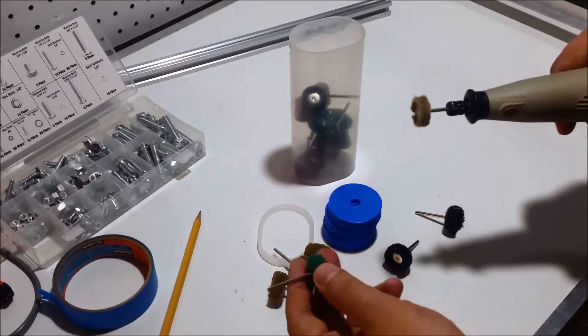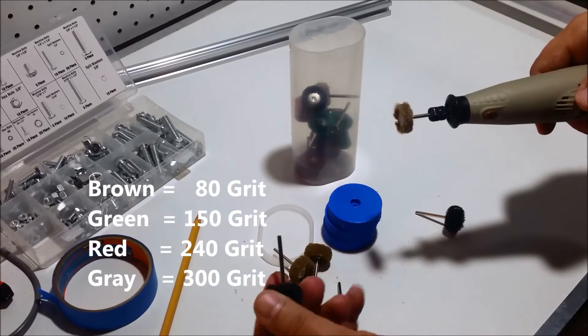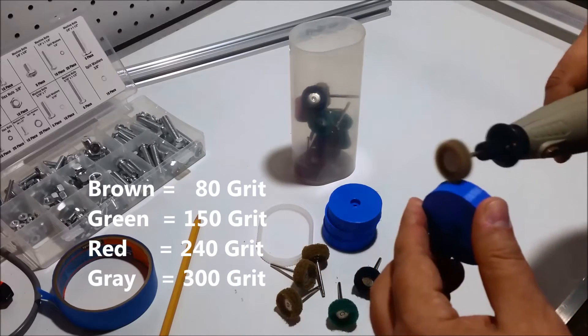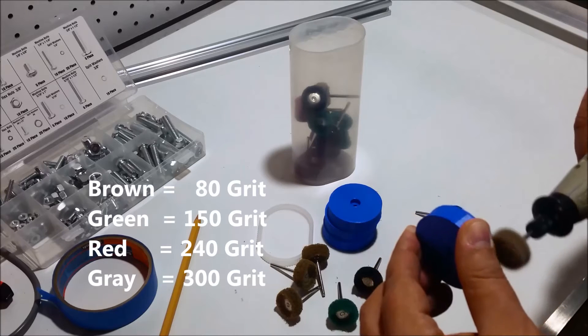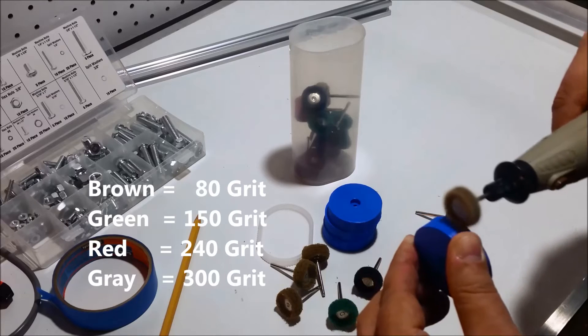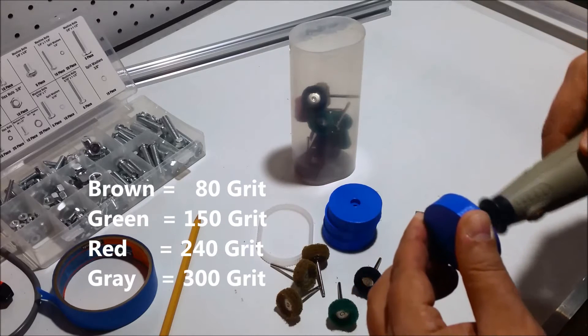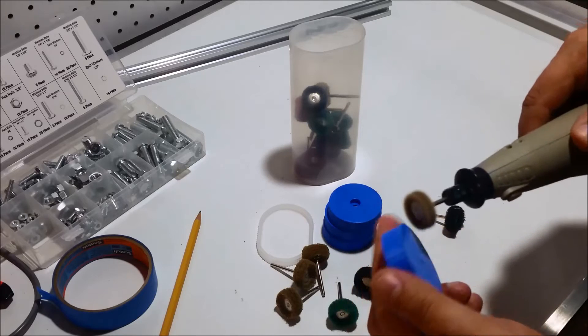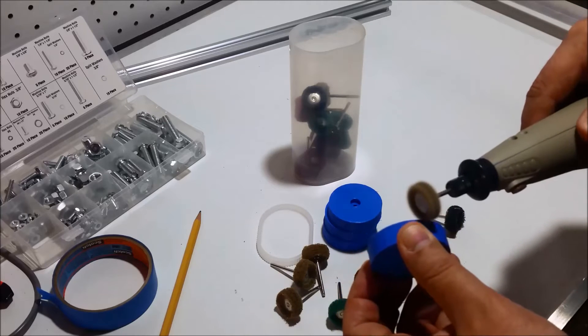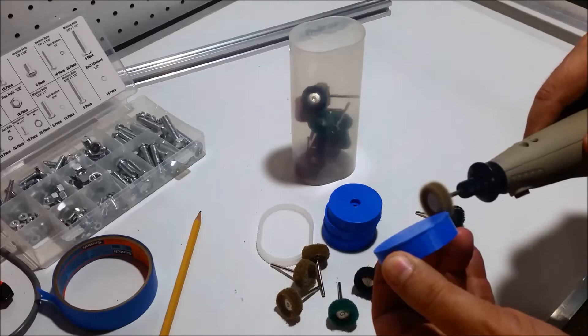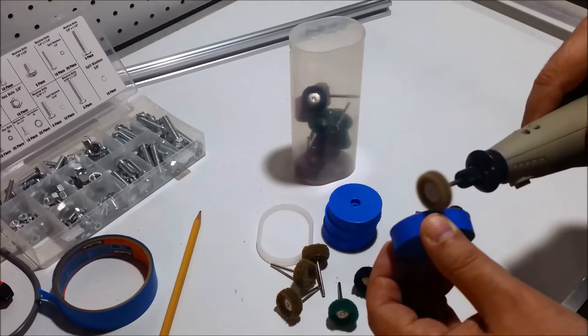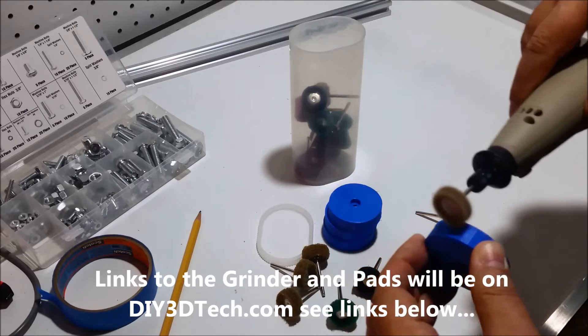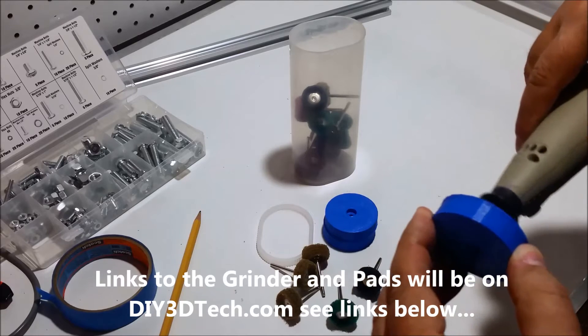Each one of these colors are different grit, and I forget the exact grit. This one seems to be the coarsest while they get lighter, but I'm not sure exactly. Basically, what you do is I just run it around here, and it does a nice job of knocking down any high spots. You can kind of clean up the surface if you want. This does a real nice job cleaning up your plastic parts.